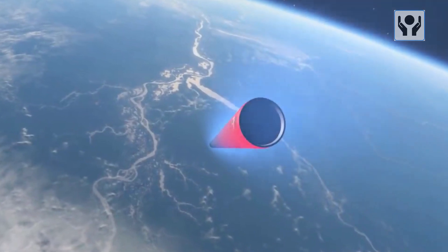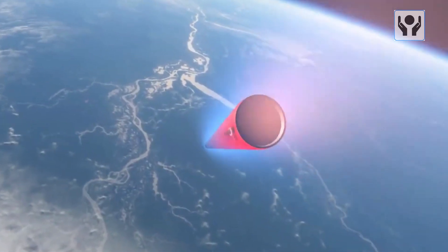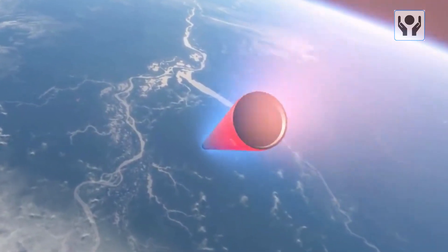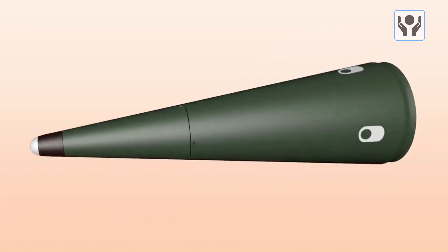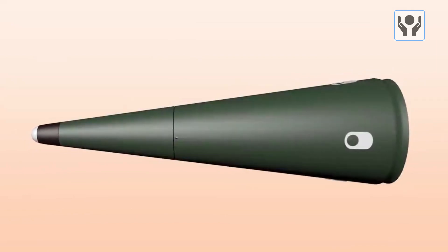The warhead is designed to be highly accurate, with a circular error probable of less than 300 meters. This means that it can hit a target with a high degree of precision, even when launched from a submarine that is moving at high speed and depth.